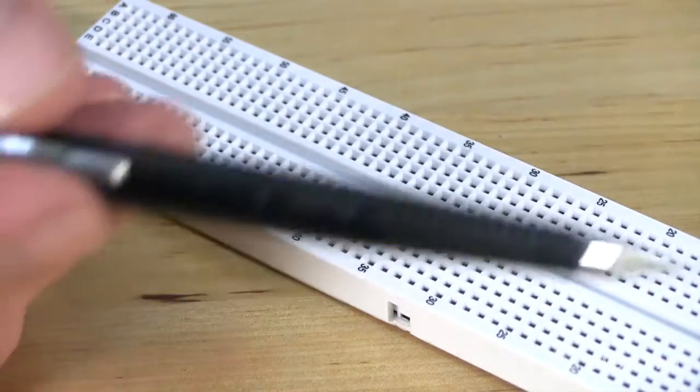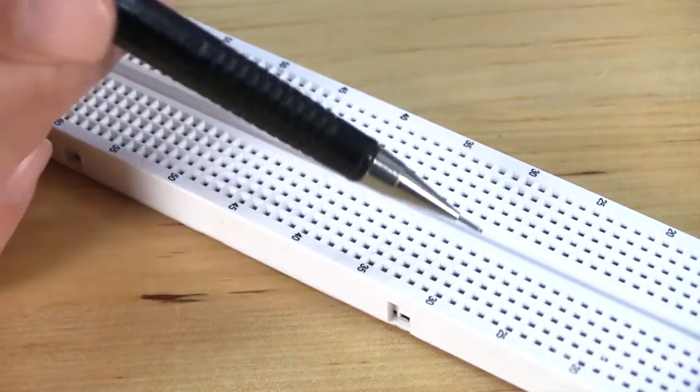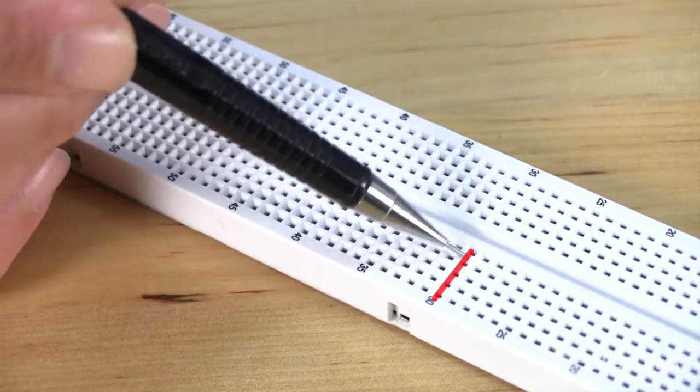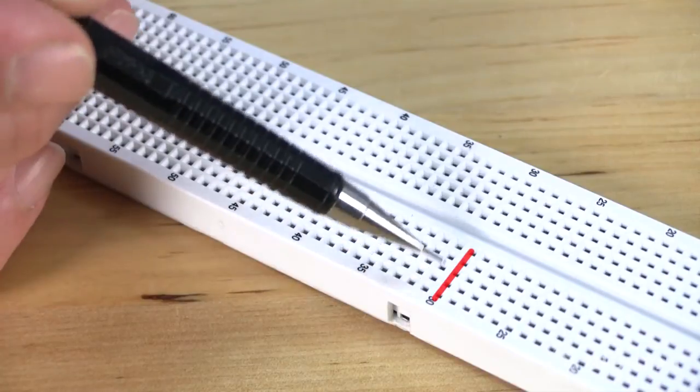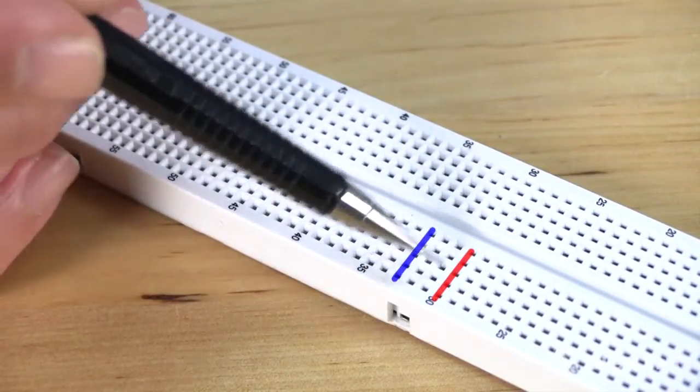A solderless breadboard is usually a large white plastic component with rows of holes in it. Breadboards have rows of five holes. All five holes in any row are electrically connected to one another. Each row of holes is isolated from any other row of five holes.